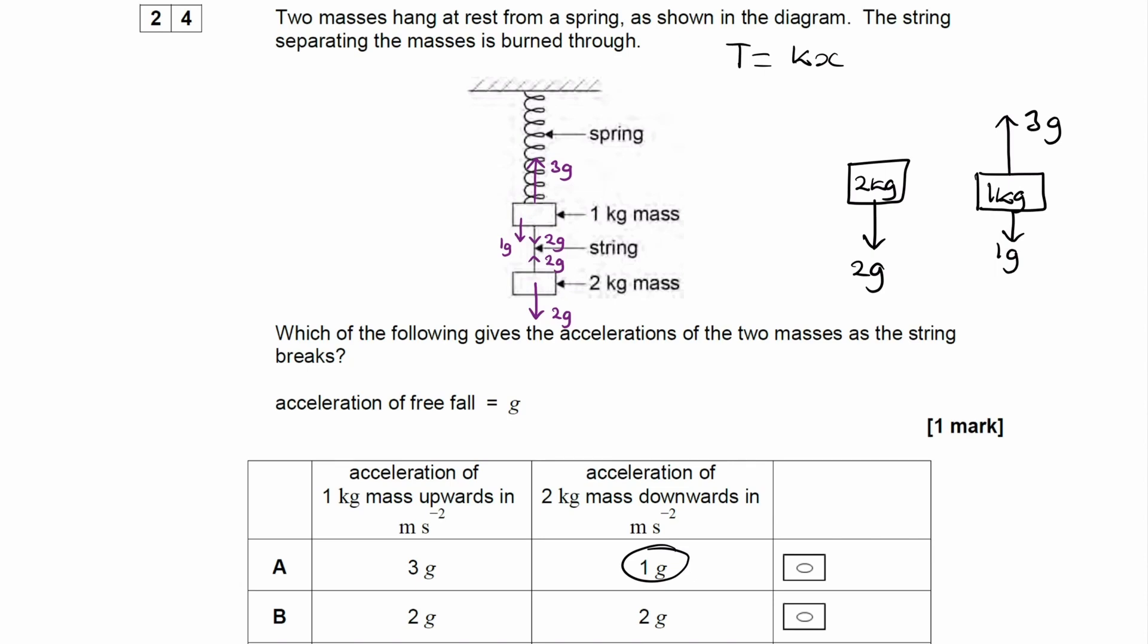As you can see, from the 1kg mass, there is a resultant upwards force of 2g. So we can then use F equals ma. The force is equal to 2g. The mass is equal to 1kg, and therefore the acceleration will just be 2g upwards.